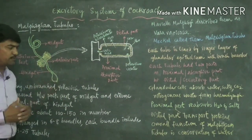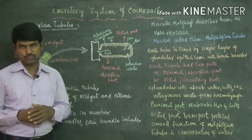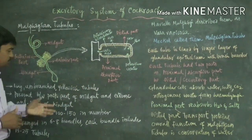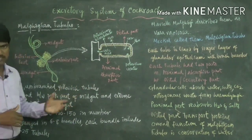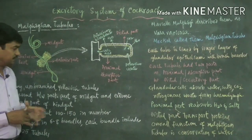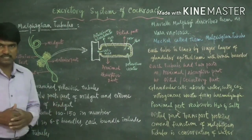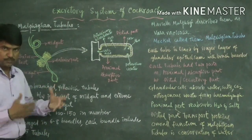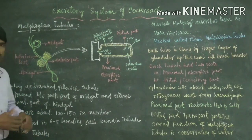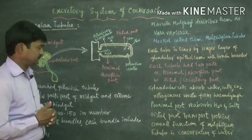There are about 100 to 150 Malpighian tubules present in the cockroach excretory system, and they are arranged in the form of 6 to 8 bundles. Each bundle includes about 15 to 25 Malpighian tubules.